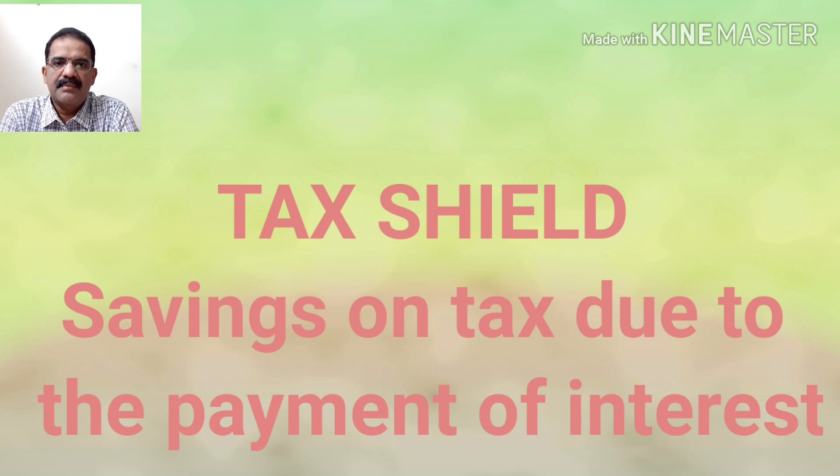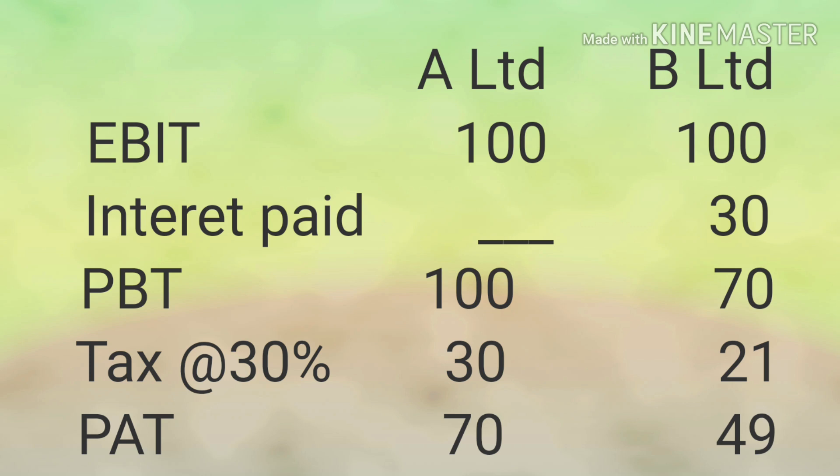Let us consider the example of A Limited and B Limited. Both have an EBIT of Rs. 100. A is a full equity company, and B has some debt with interest of Rs. 30. The profit before tax is Rs. 100 for A Limited and Rs. 70 for B Limited. Tax at 30%: Rs. 30 for A and Rs. 21 for B. Profit after tax: Rs. 70 for A and Rs. 49 for B. Comparing profit after tax, we see only a difference of Rs. 21, even though B paid Rs. 30 as interest. This difference is the concept of tax shield.